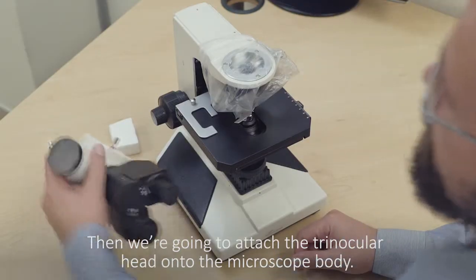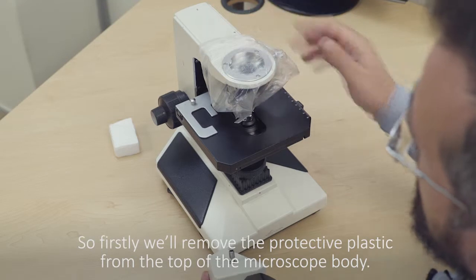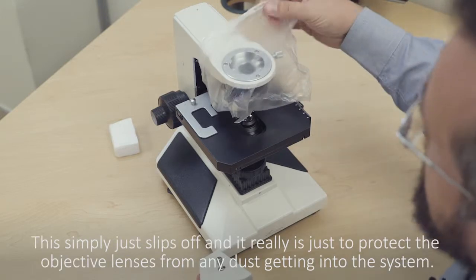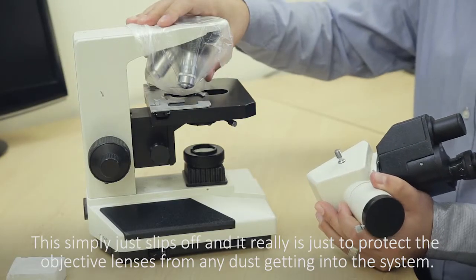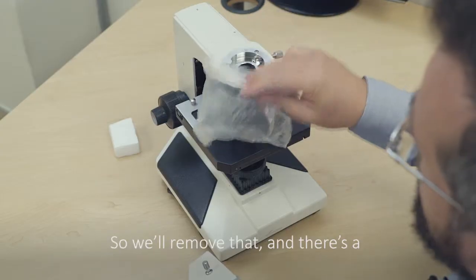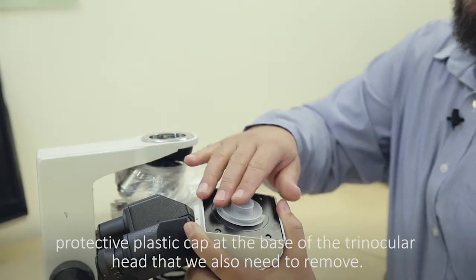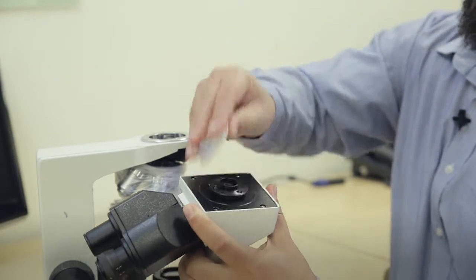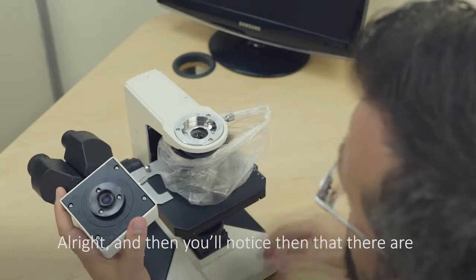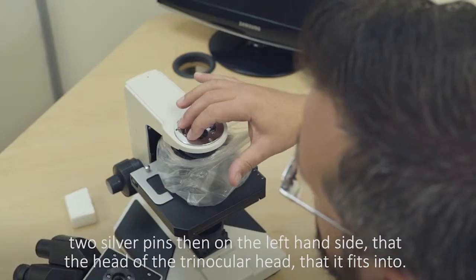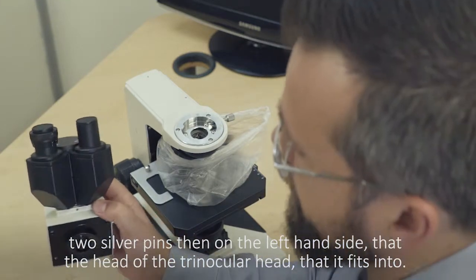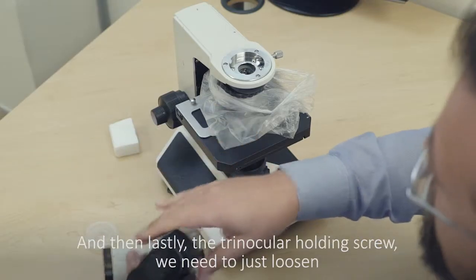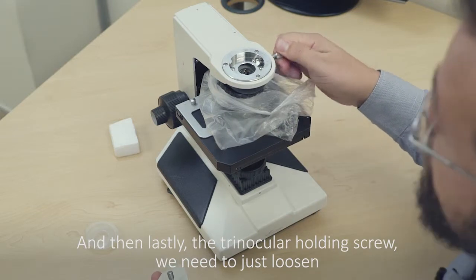Then we're going to attach the trinocular head onto the microscope body. So firstly we'll remove the protective plastic from the top of the microscope body. This simply just slips off and it really is just to protect the objective lenses from any dust getting into the system. We'll remove that and there's a protective plastic cap on the base of the trinocular head that we also need to remove. You'll notice that there are two silver pins then on the left hand side that the head of the trinocular head fits into, that basically hold onto this area here. And then lastly the trinocular holding screw we need to just loosen.